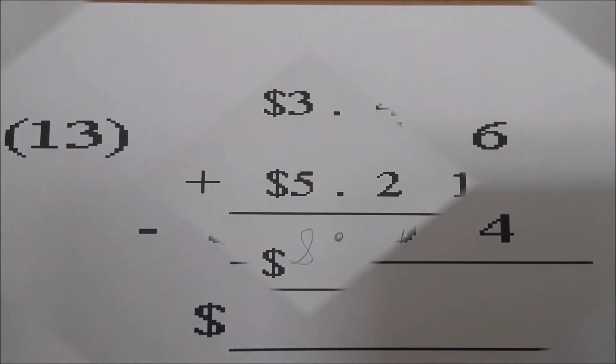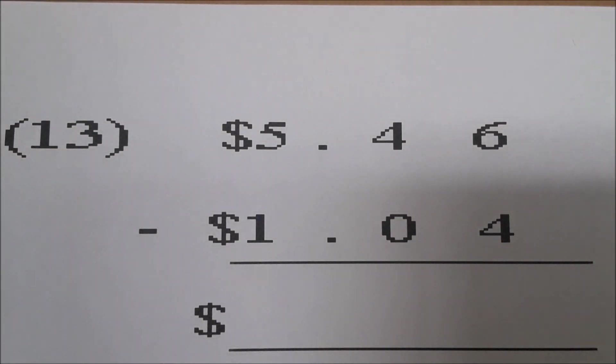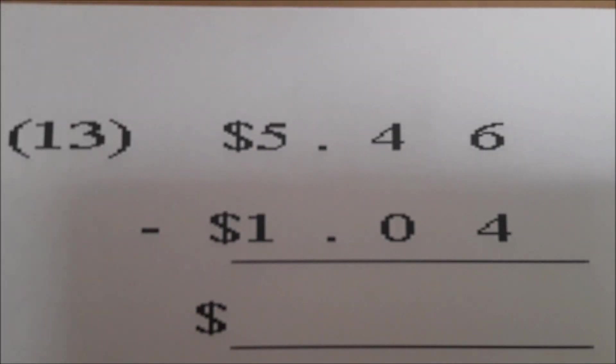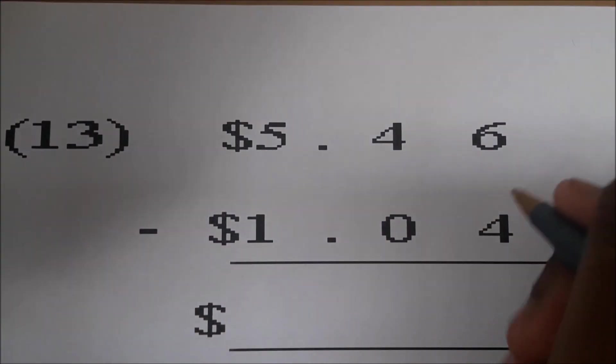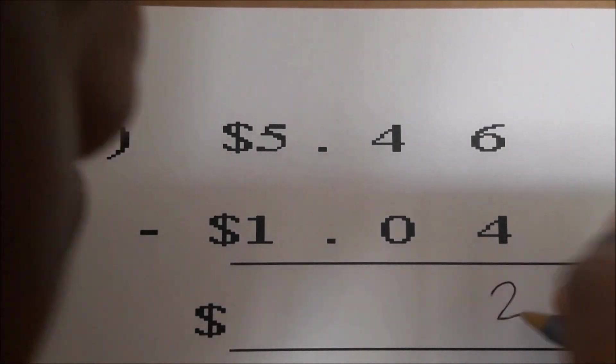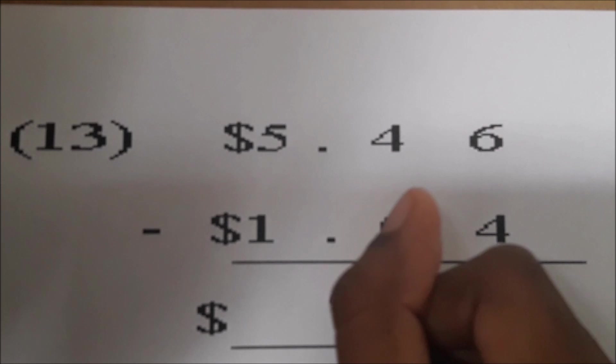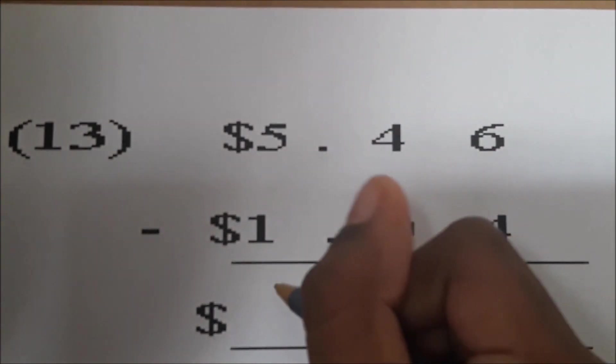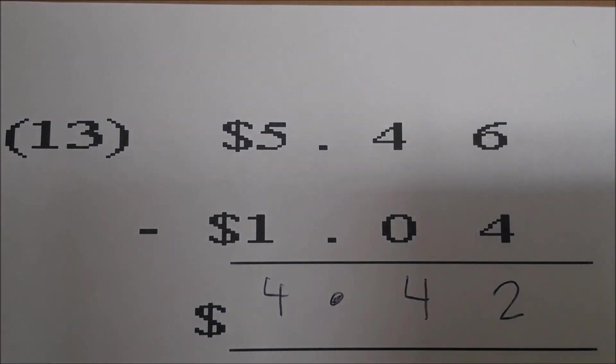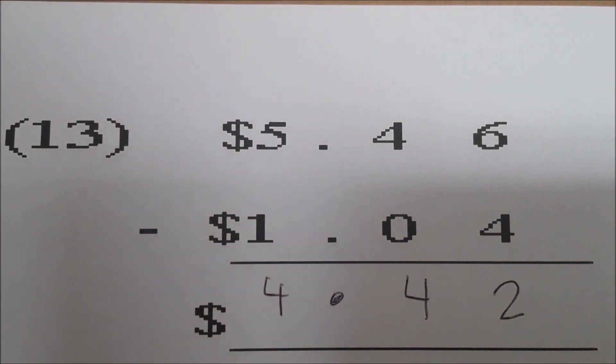Let's move on to number thirteen. Number thirteen, Sky, go ahead. Five dollars and forty-six cents take away one dollar and four cents. Okay, go ahead and work it. Six take away four is two. Four take away zero is four. Five take away one is four. Four dollars and forty-two cents. Excellent job.